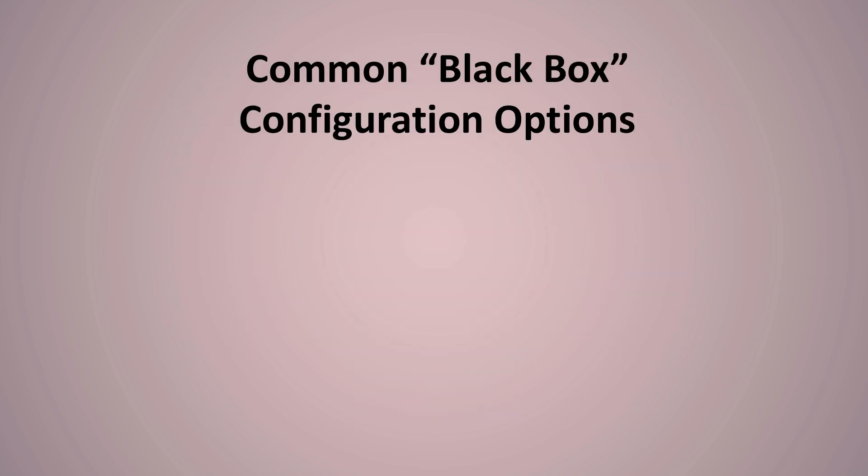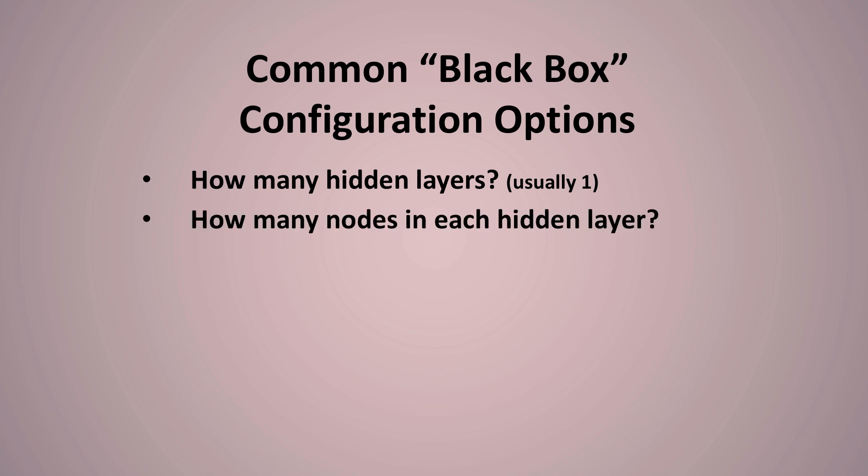So this video is going to dive into the hidden layers area, that black box and how we configure it and what it does. So there's some common configuration options, no matter what machine learning or neural network library you're using. One, how many hidden layers do we put in that black box? We know we have an input layer and an output layer. How many layers go in the middle? And usually one is where you need to start off with.